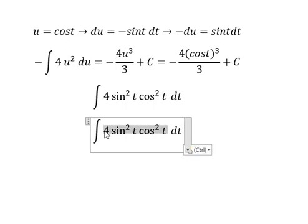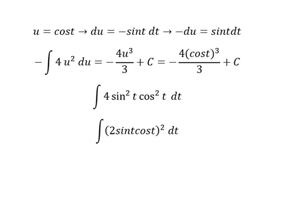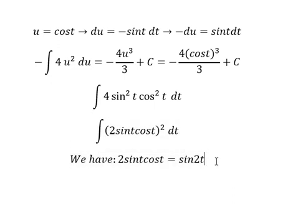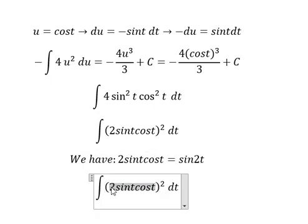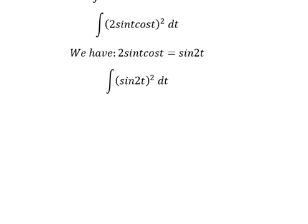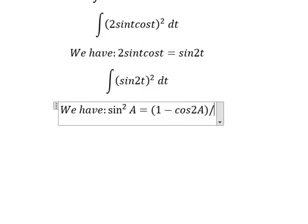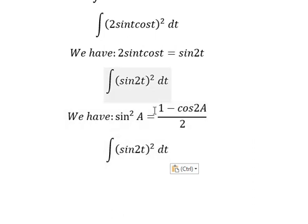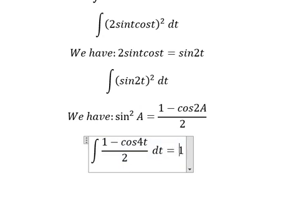Now we focus on this part. We have two sin(T) cos(T) everything to the power of two. Using the double-angle formula, capital A equals two T. Now we have the final answer.